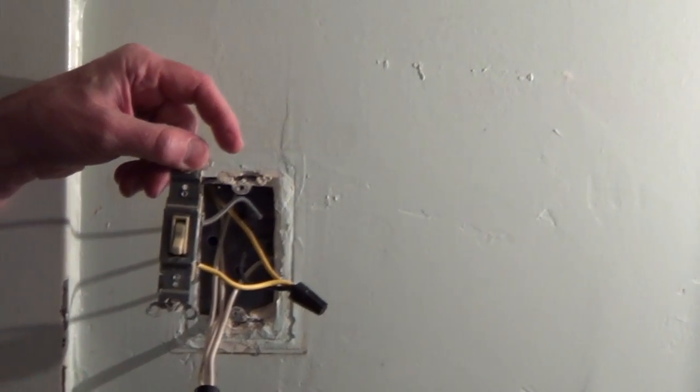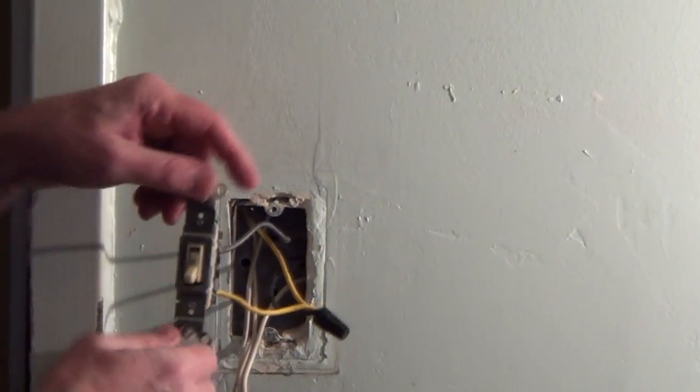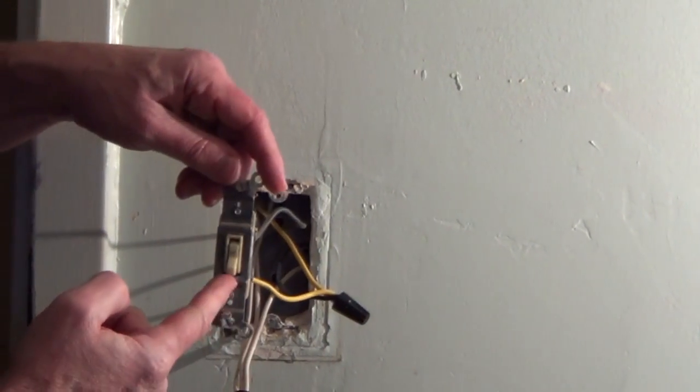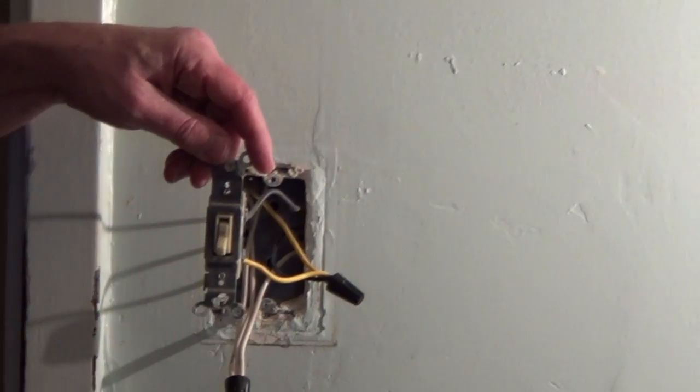It's one switch that goes up to a light or a group of lights and you can tell because there's only two screw terminals plus a ground and then we have on and off marked on the switch.